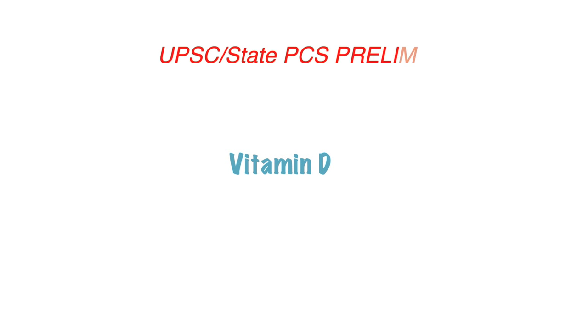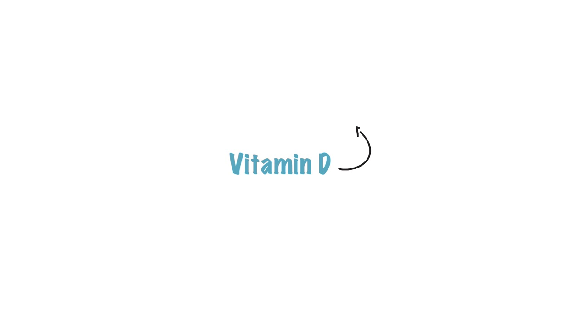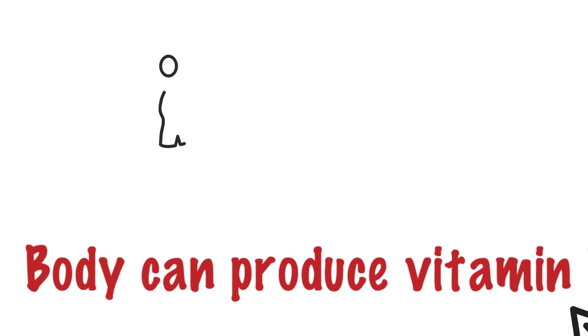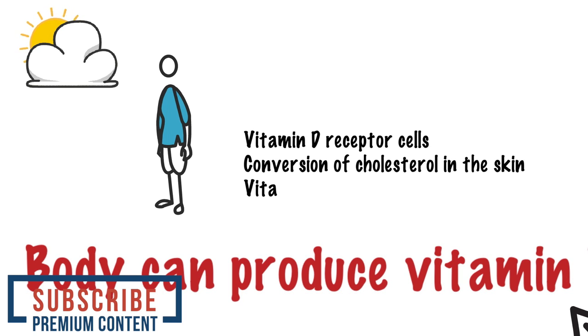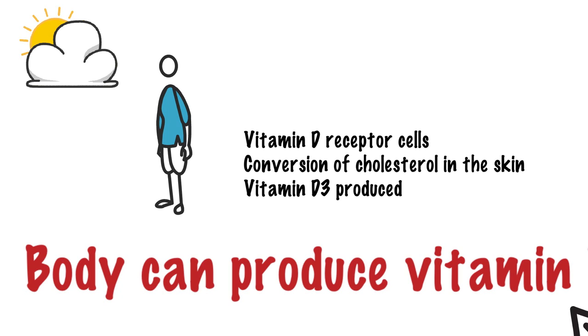Now let us look at Vitamin D. From an exam perspective, this is a very important detail — please make a note of this. Vitamins generally are nutrients that the body cannot create, so a person must consume them from external food sources. However, our body can produce Vitamin D. When exposed to the sun, your skin can manufacture its own Vitamin D. We all have Vitamin D receptor cells in our body, and when we stand in the sun, these cells are exposed to ultraviolet rays. This triggers the conversion of cholesterol present in the skin into Vitamin D3 through a chain of reactions in our body. So our bodies are capable of using sunlight to make their own vitamin — how cool is that!